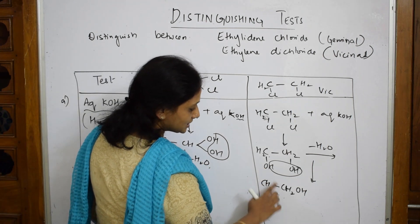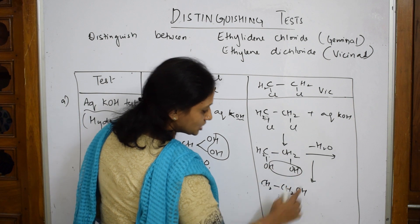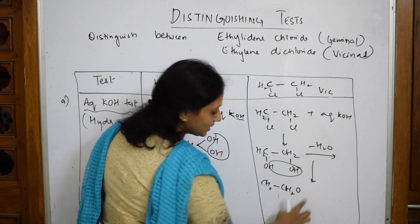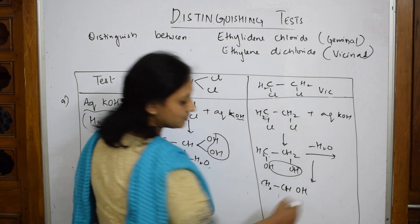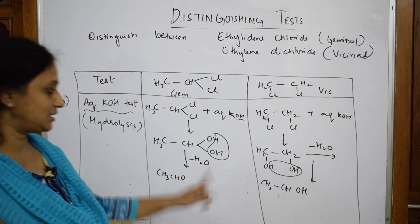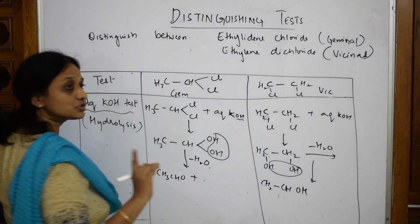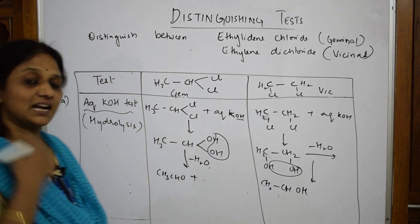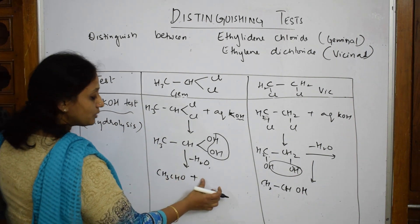So can I write this as CH₂OH–CH₂OH? Yes. Now, to this aldehyde from the geminal halide, I am going to add 2,4-DNP. Why? Because 2,4-DNP is the characteristic test for aldehydes.